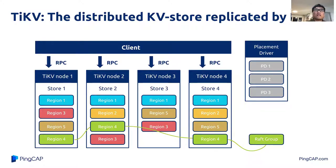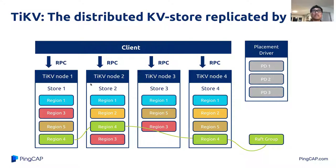Now let me talk a little bit about TiKV to give you some background for the main topic of this talk. TiKV is a distributed transactional key-value database, and it is a graduated project of the CNCF. This diagram shows the overall architecture of TiKV — a cluster with four machines. We use a shared-nothing architecture so that TiKV can run on commodity hardware with no special equipment needed. Each machine can host multiple regions, potentially more than 10,000. These regions are replicated by the Raft protocol and regulated by the placement driver, which communicates with TiKV via gRPC.